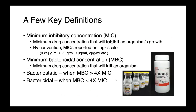Briefly, to summarize a few key definitions: the minimum inhibitory concentration (MIC) is the minimum concentration that will inhibit an organism's growth — not necessarily kill the organism. By convention, MICs are reported on a log 2 scale: 0.25, 0.5, 1, 2, etc., micrograms per milliliter. The minimum bactericidal concentration (MBC) is the minimum drug concentration that will actually kill the organism — not just arrest its growth, but actually kill it.